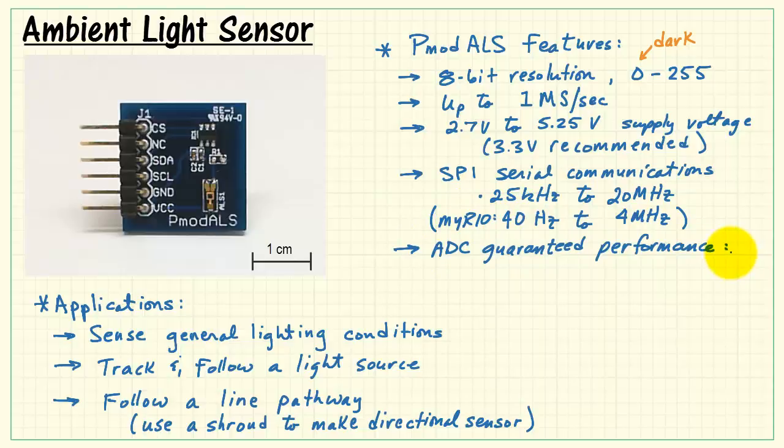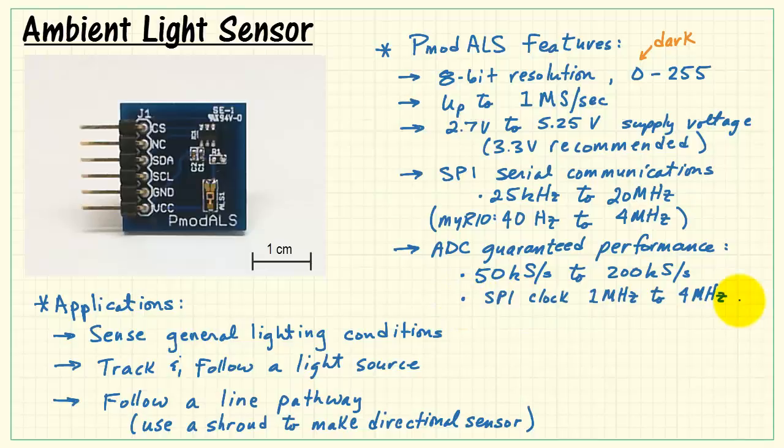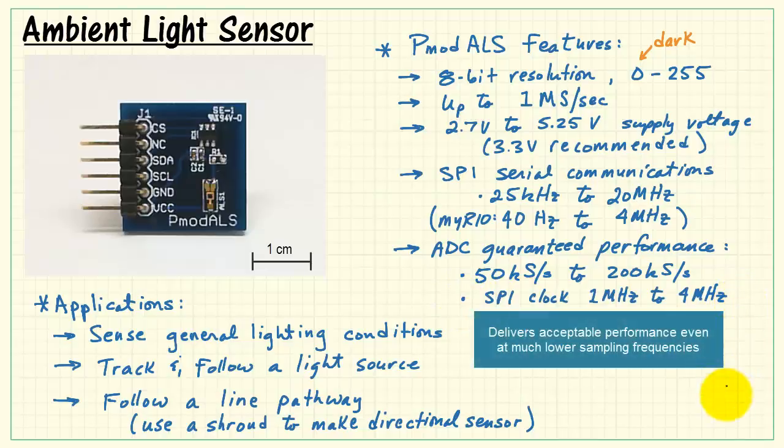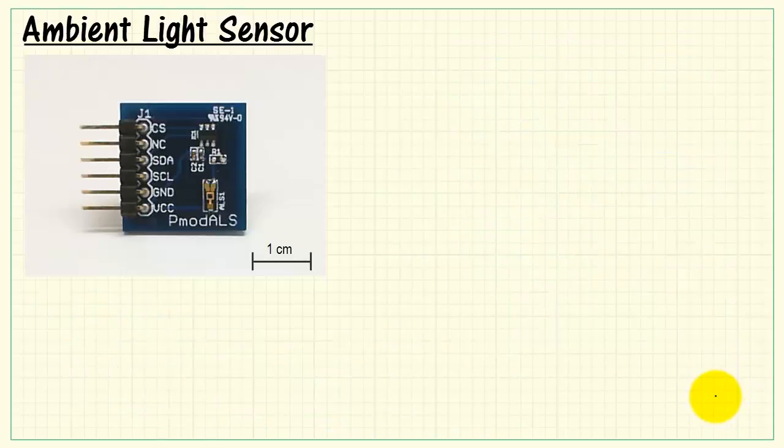The guaranteed performance according to the spec sheet is 50 kilo samples per second up to 200 kilo samples per second with SPI clock of 1 megahertz to 4 megahertz. Although you'll find that the converter delivers perfectly acceptable performance even at much lower sampling frequencies.